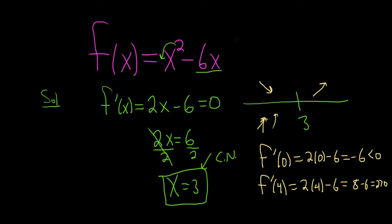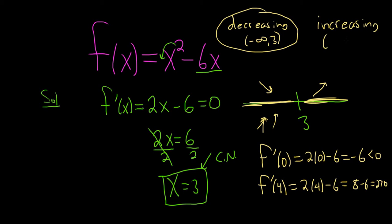So from this picture, we can get all of the answers. So it's going to be decreasing over here. So it will be from negative infinity to 3. That's where it's decreasing. It's always parentheses, by the way, for increasing, decreasing. And it will be increasing over here on the right, so from 3 to infinity. So that answers the first part of the question, the increasing, decreasing.